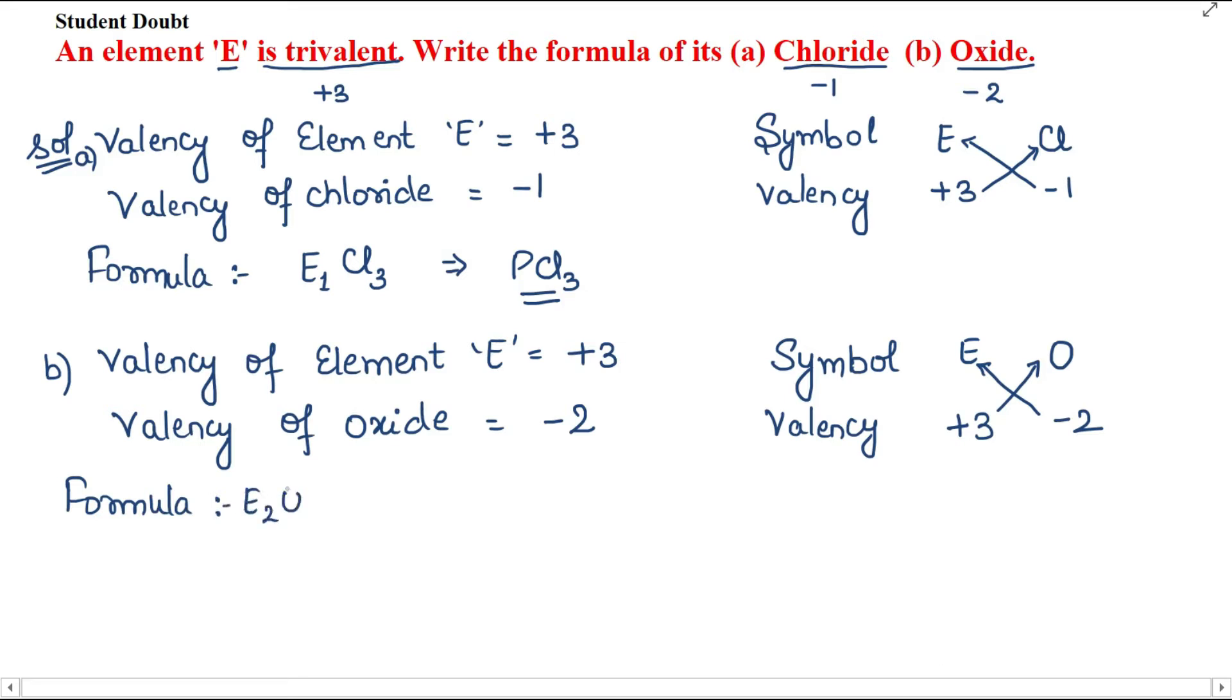E2O3. For example, nitrogen with oxygen forms dinitrogen trioxide, N2O3, which follows the E2O3 formula.